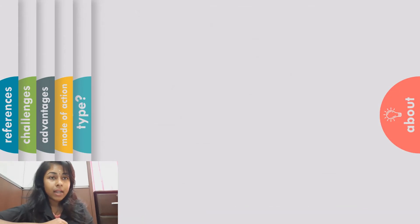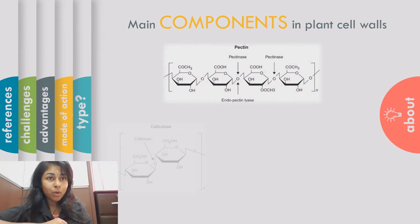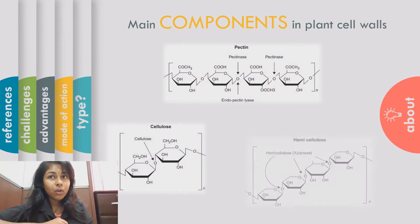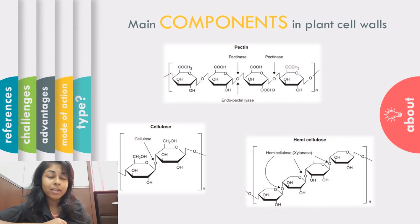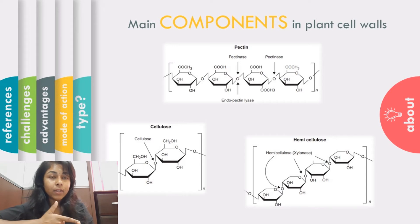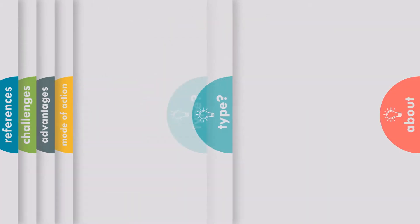In addition, we should understand the main components in plant cell walls in order to have a better comprehension of the types of enzymes involved as well as their mode of action. Pectin, cellulase, and hemicellulase are the three main components targeted by the enzymes during those two stages mentioned before.